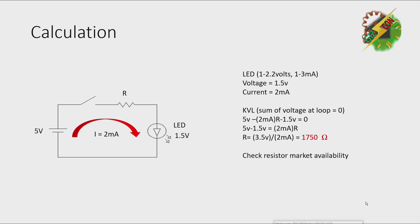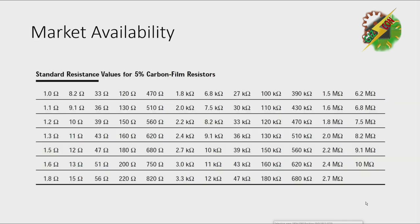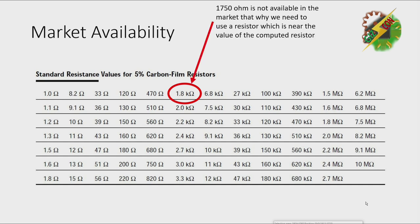Now let's check the resistor market availability. As you can see, 1750 ohms is not available in the market. That's why we need to choose a resistor which is near the value of our computed resistor.